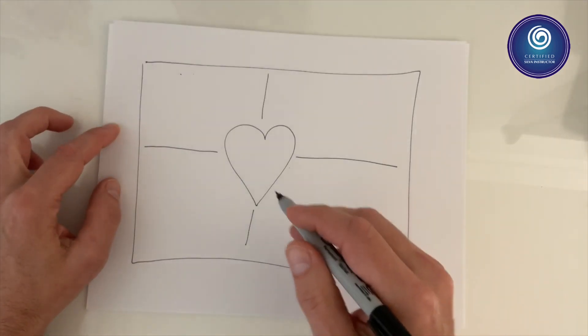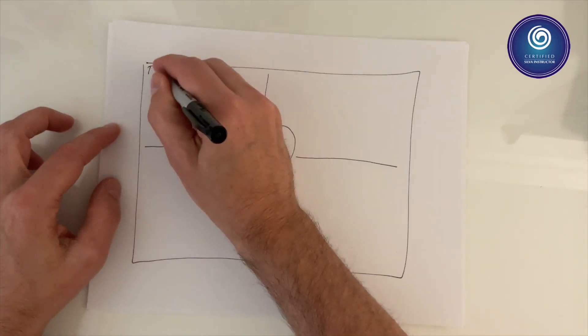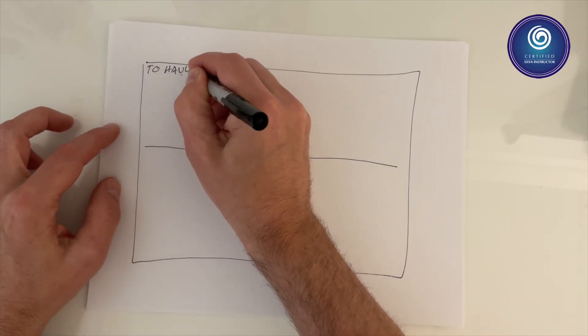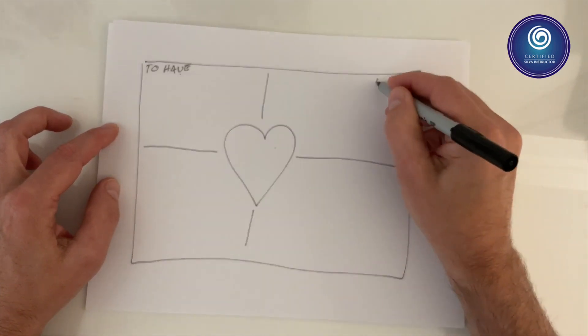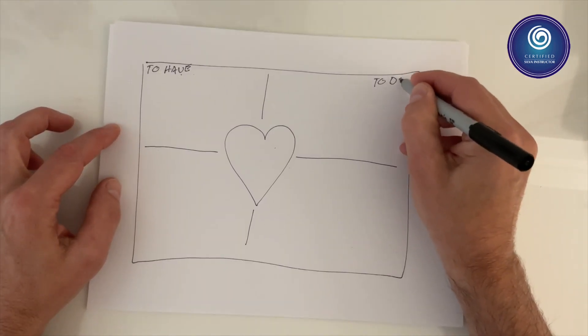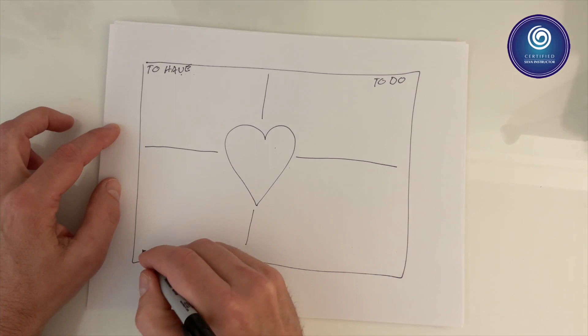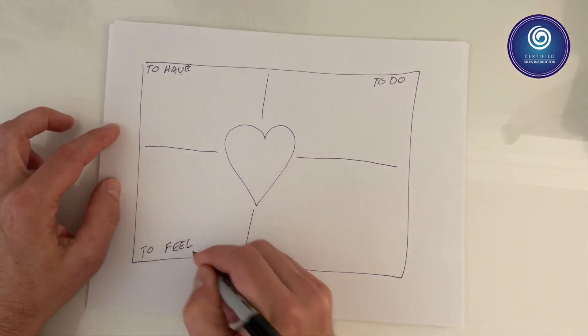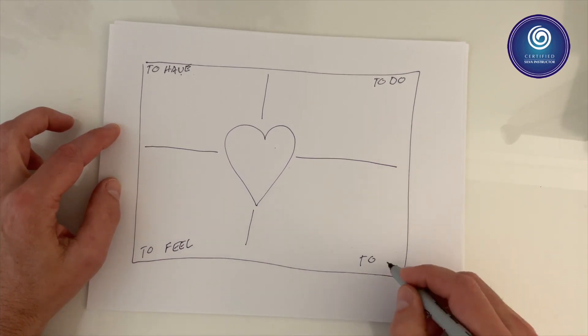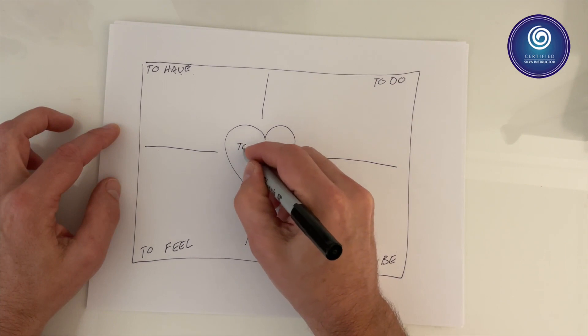At the top of the left square write 'to have'. Top right, 'to do'. To feel at the bottom left. And 'to be'. In the heart write the word 'to serve'.